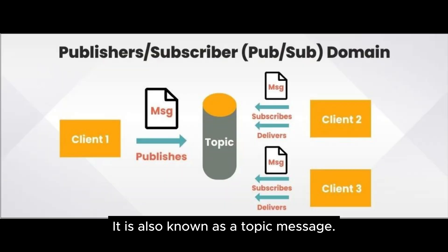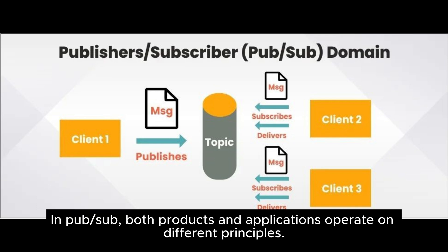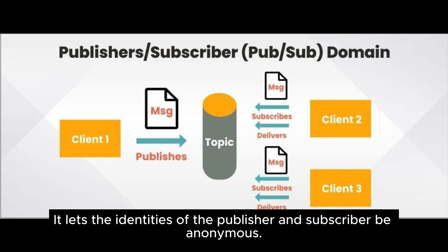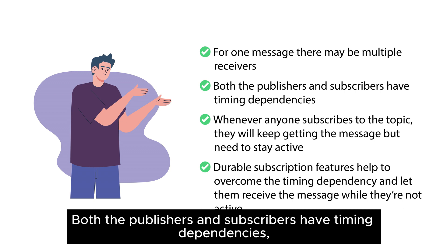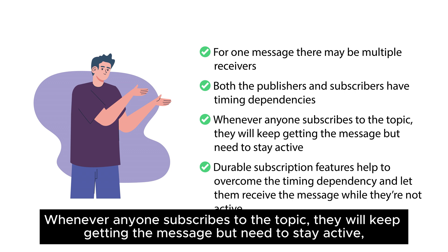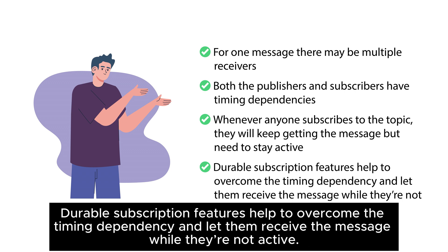The second domain is the Publisher/Subscriber, or pub/sub, domain, also known as a topic message. In pub/sub, both producer and subscriber applications operate on different principles. It lets the identities of the publisher and subscriber be anonymous. Publisher/Subscriber domain characteristics include: for one message there may be multiple receivers; both publishers and subscribers have timing dependencies; whenever anyone subscribes to the topic, they will keep getting the message but need to stay active. Durable subscription features help overcome the timing dependency and let them receive the message while they're not active.